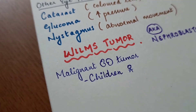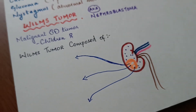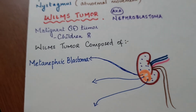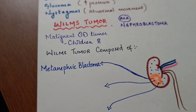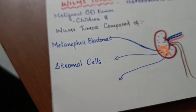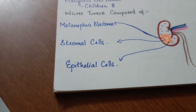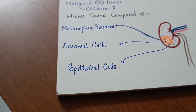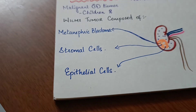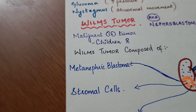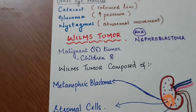Wilms tumor is composed of three cell types: metanephroblastoma, which are cells developing inside the kidney; stromal cells, which are part of the connective tissue inside the kidney; and epithelial cells, which are self-organized into primitive glomeruli and tubules.